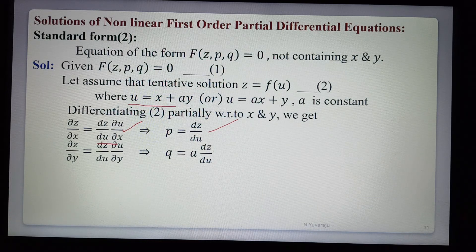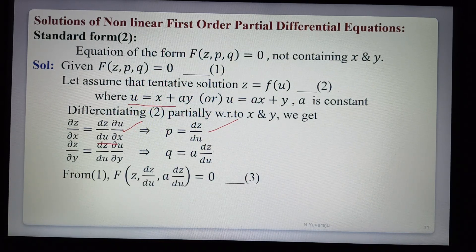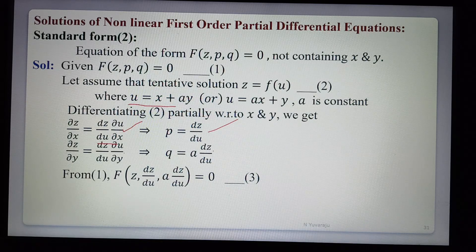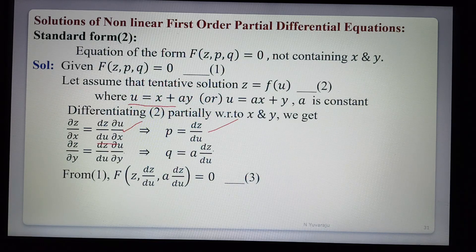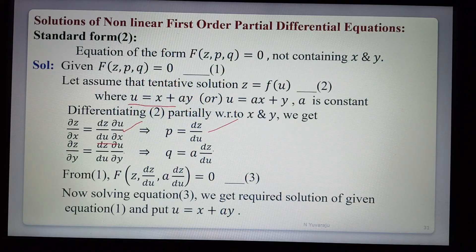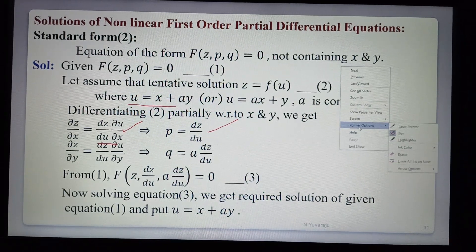Substituting p and q into equation 1, we get f(z, dz/du, a · dz/du) = 0. This is equation 3, which is an ordinary differential equation in z and u. Solving it gives z in terms of u, and replacing u = x + ay gives the required general solution.